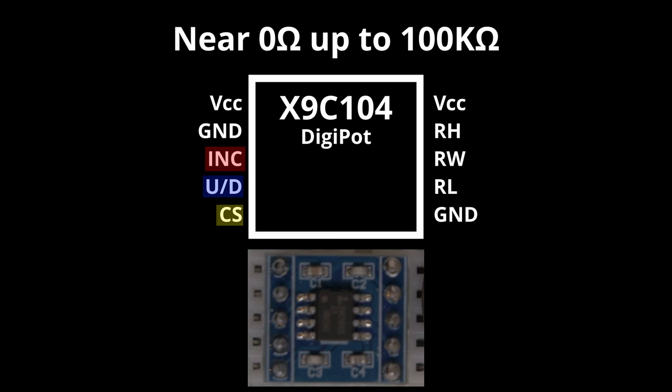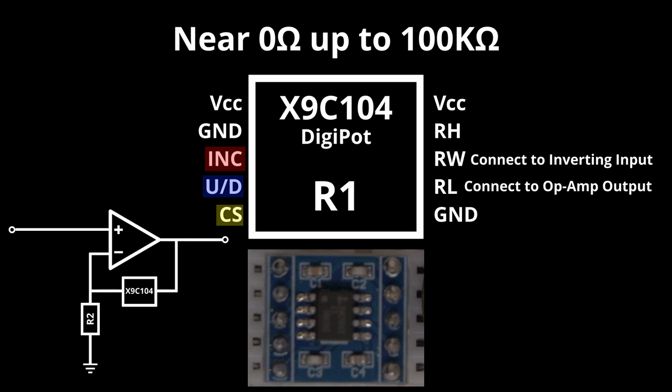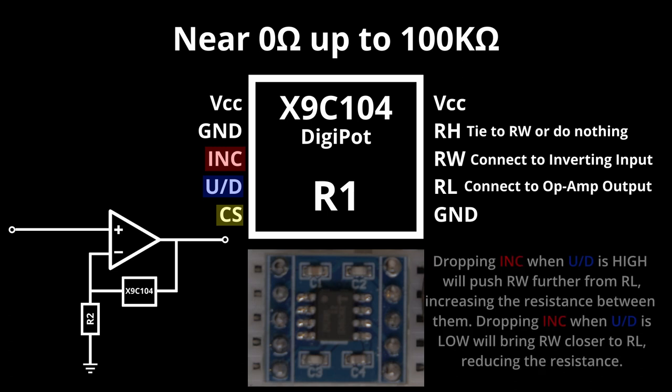I'm going to connect the output pin of the op-amp to the resistor low pin of the digipot. Resistor wiper will be connected back to the inverting input pin of the op-amp, so that it is now playing the role of resistor R1 in the op-amp circuit. Resistor high can either be tied to resistor wiper or left floating. When I raise or lower the resistance of the digipot, the amplification of the op-amp will change as well.